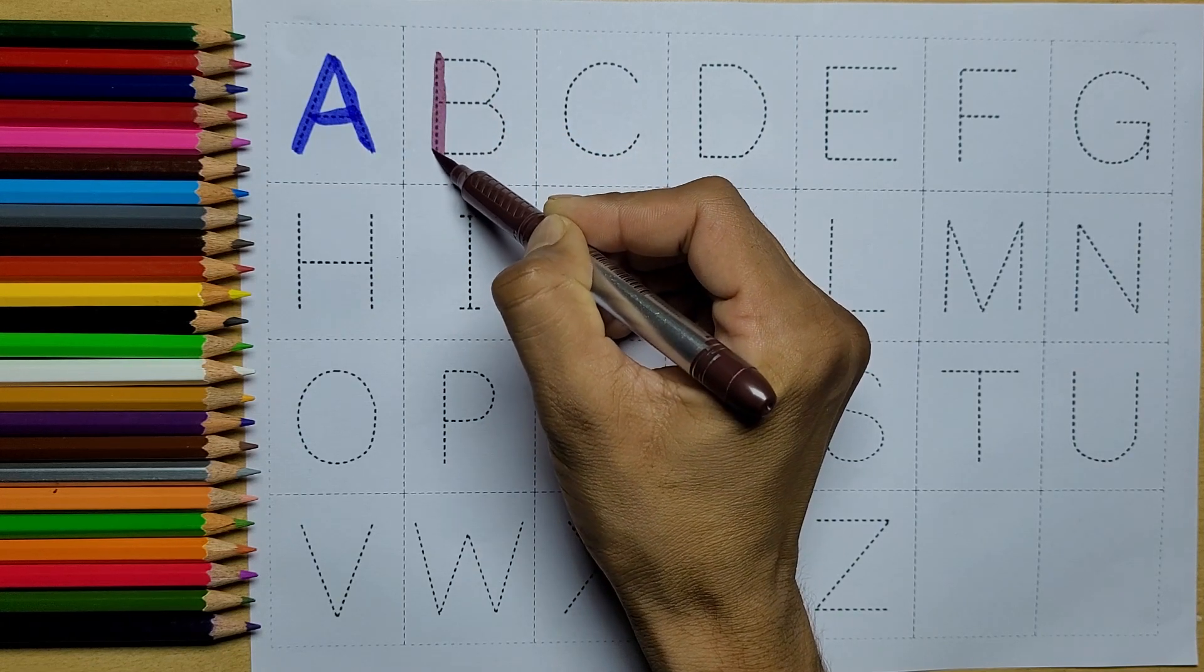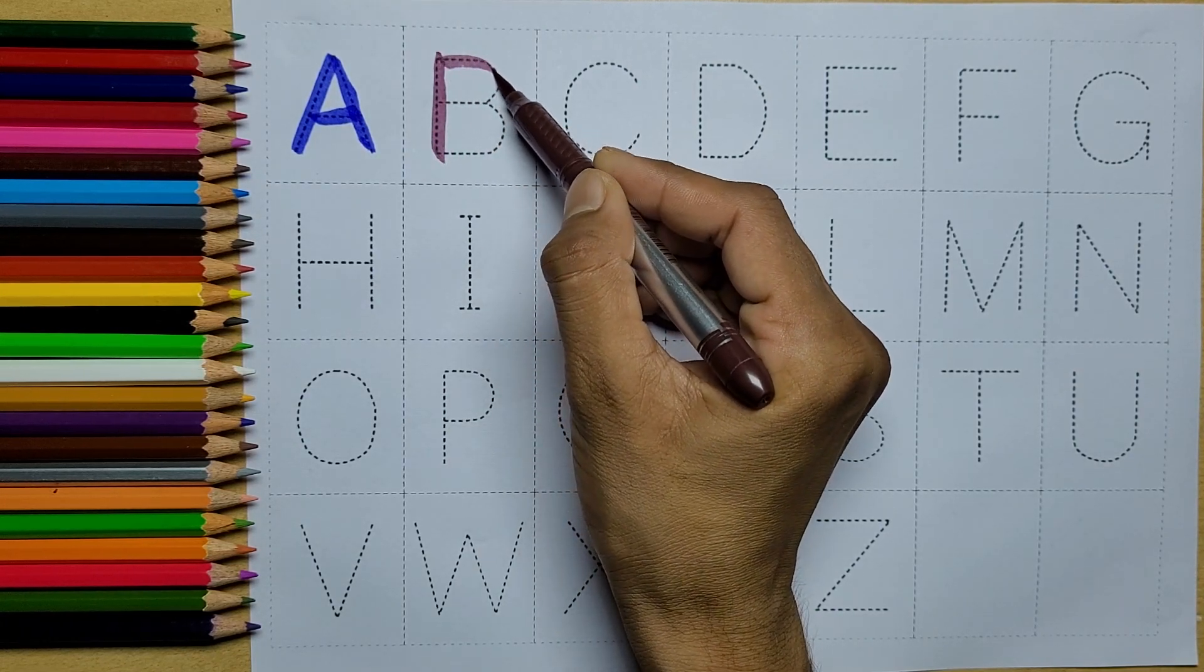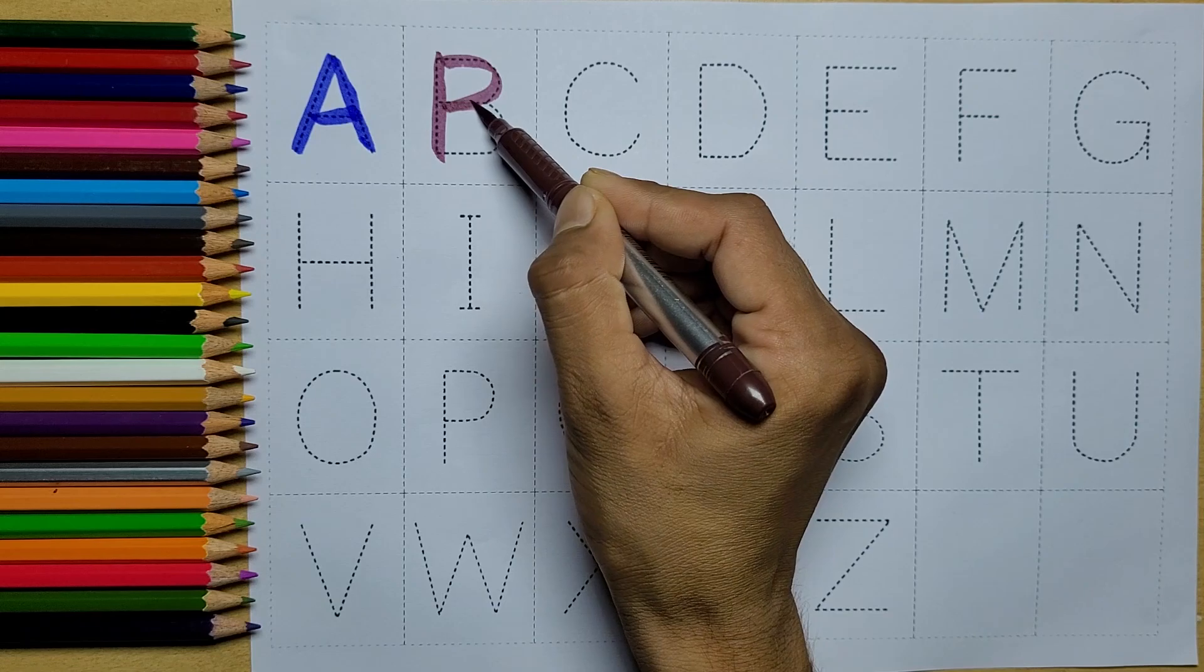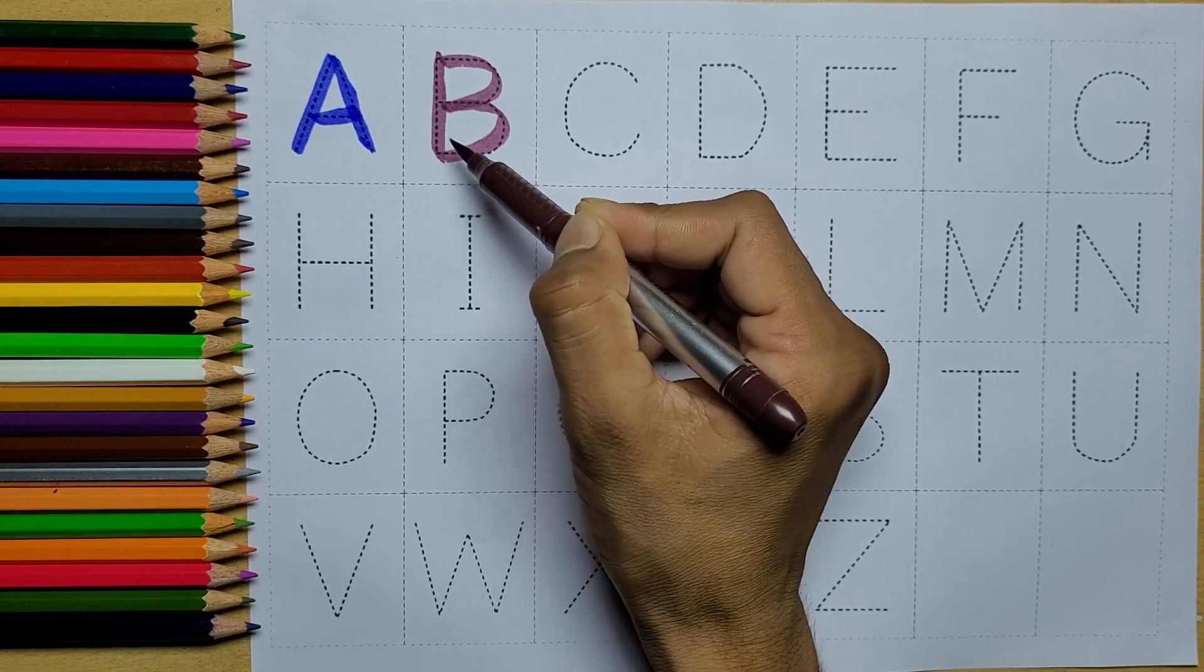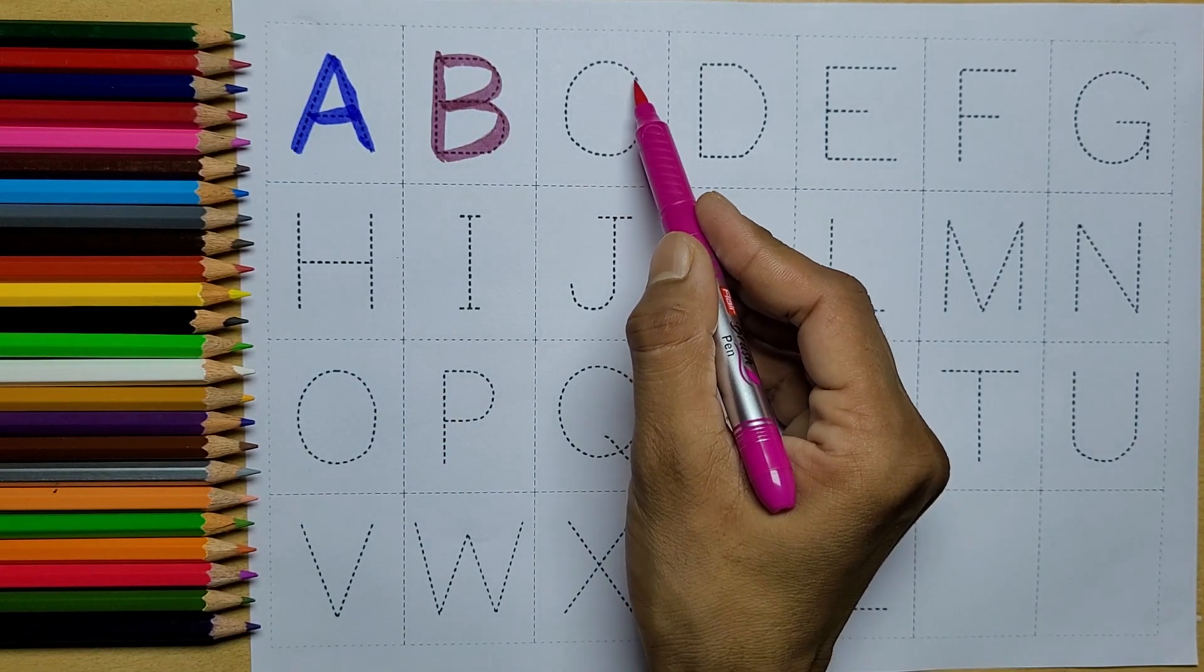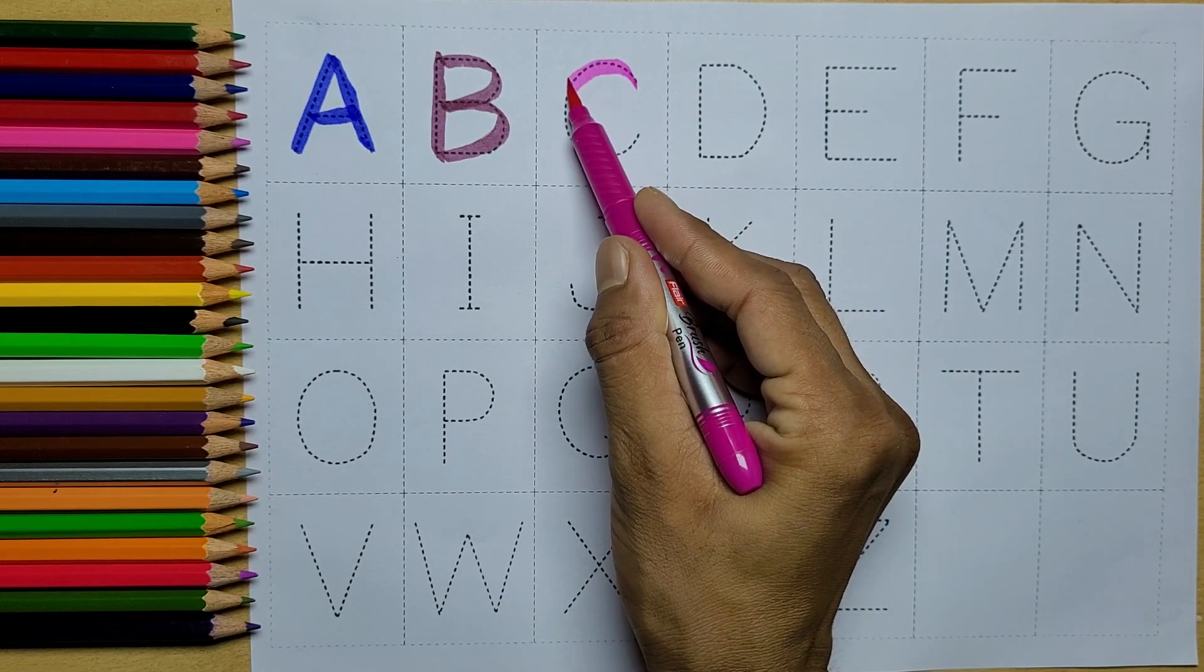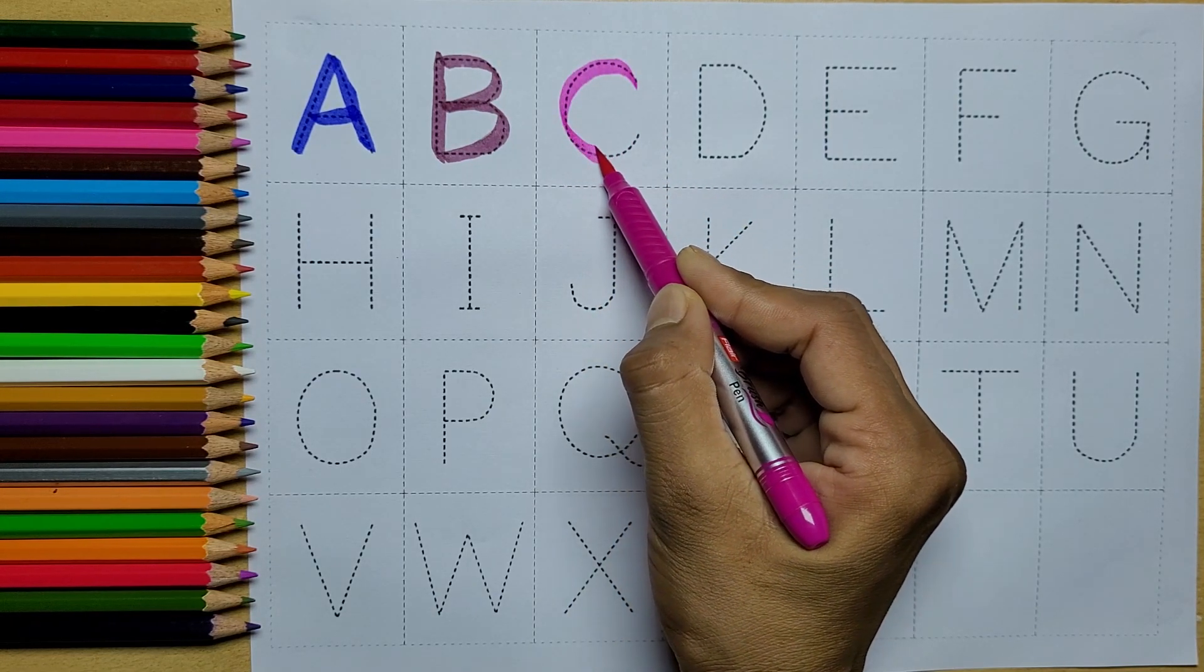Brown color. B, B for Y. Pink color. C, C for cow.